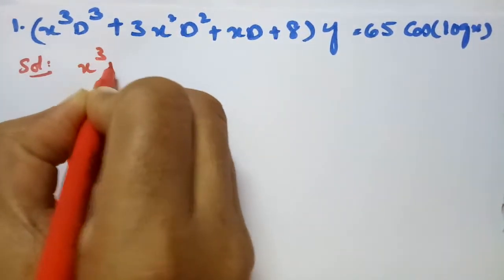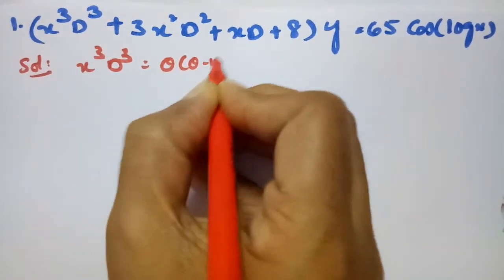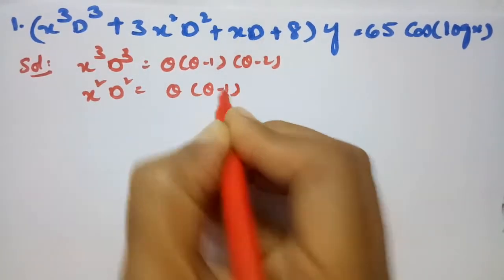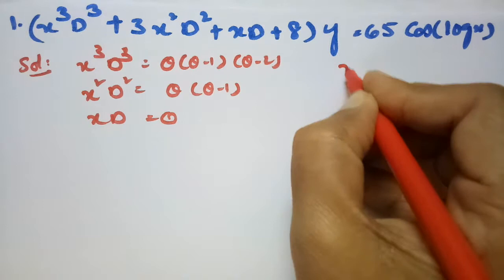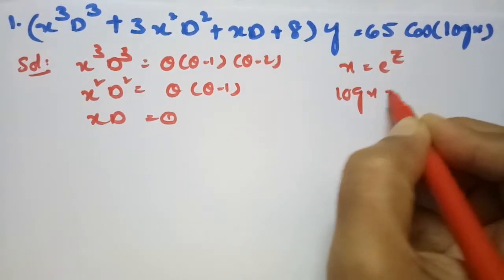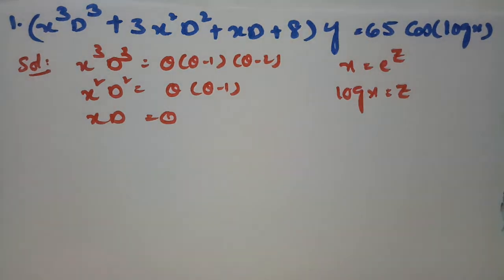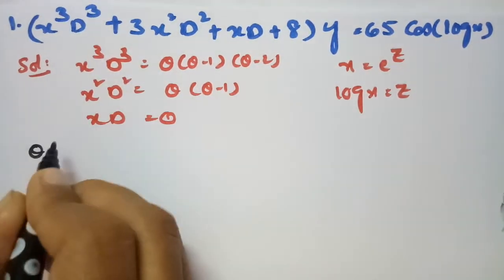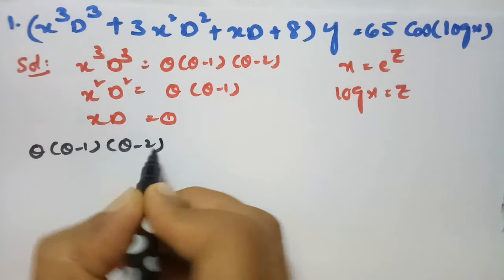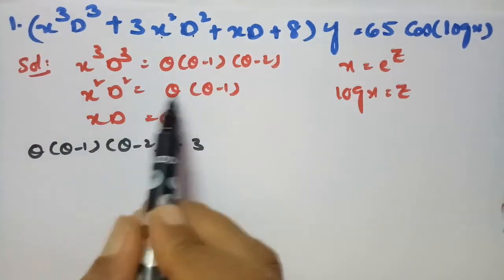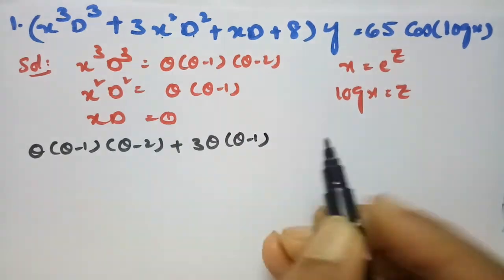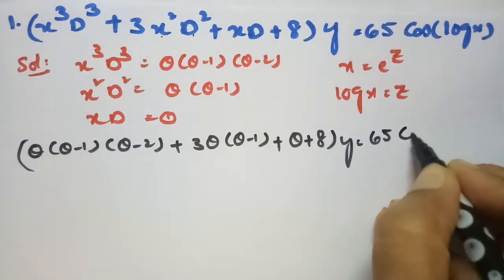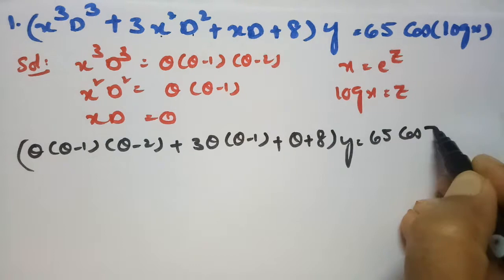According to our substitution, x³D³ is replaced by θ(θ-1)(θ-2), x²D² is replaced by θ(θ-1), and xD is replaced by θ. Also, x = e^z and log x = z. So applying these substitutions, we write θ(θ-1)(θ-2) + 3θ(θ-1) + θ + 8 of y = 65 cos z.